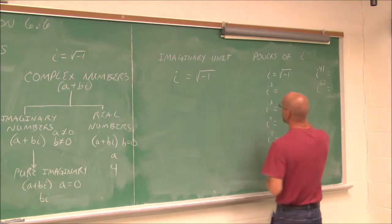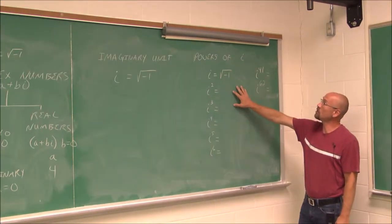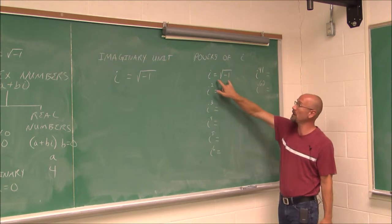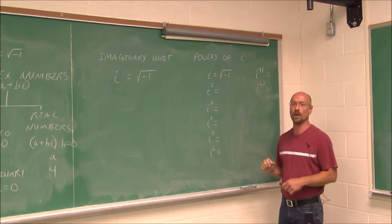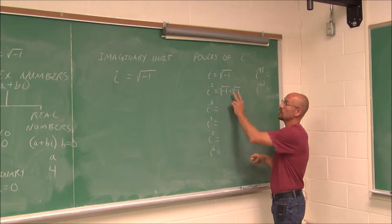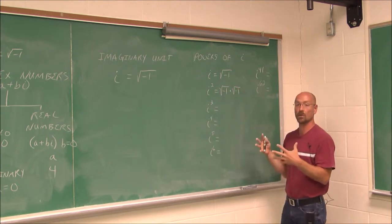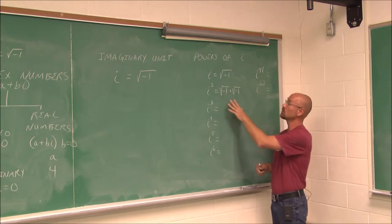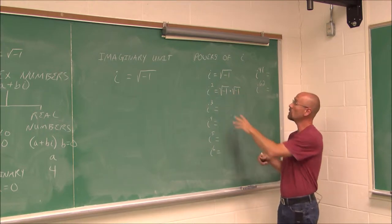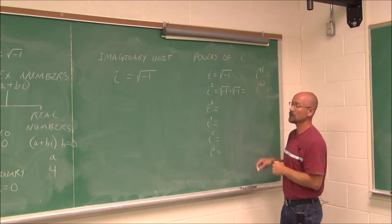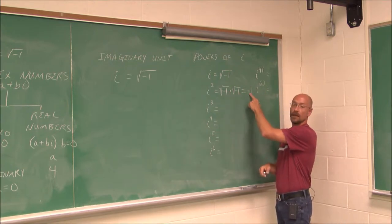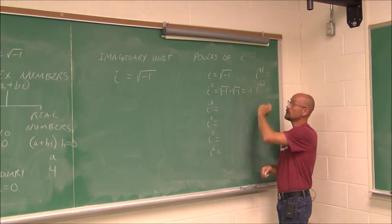One property of i we might encounter is raising it to some power. If we have i to the first power, by definition i is the square root of negative 1. If we have i squared, it is the square root of negative 1 times itself. Using the product rule, the square root of negative 1 times the square root of negative 1 is a square root being squared — when we square a square root, we get the radicand. Our radicand is negative 1, so i squared equals negative 1. That's a real value.